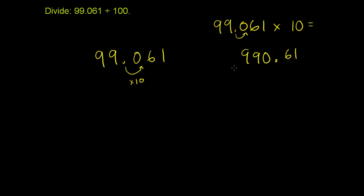Notice, we just moved the decimal over to the right by one. 99.061 divided by 10, we're going to shift the decimal in the other direction. This is going to be 9.9061.